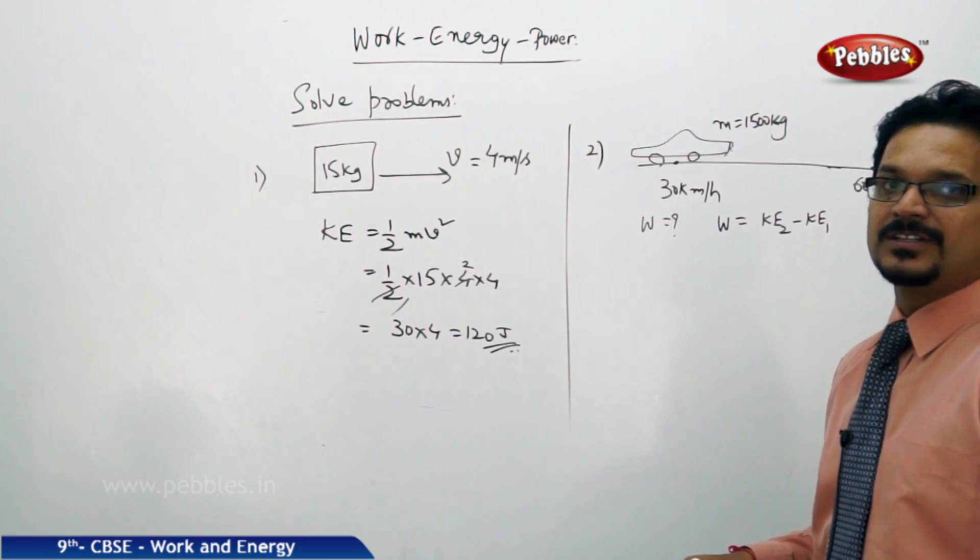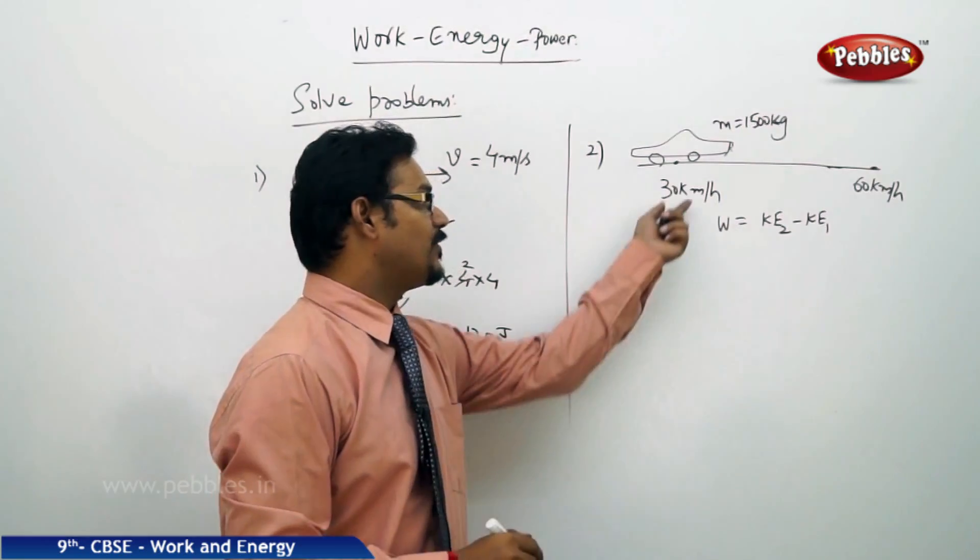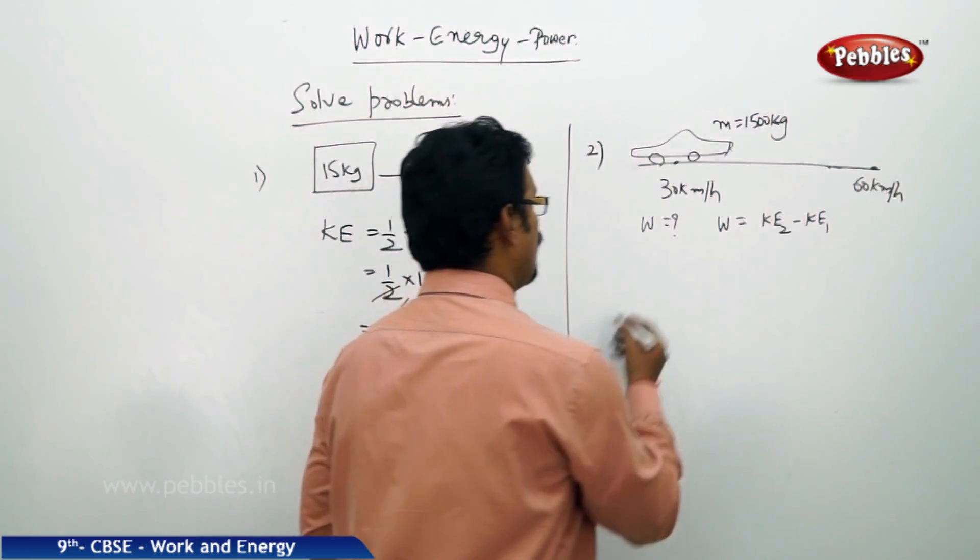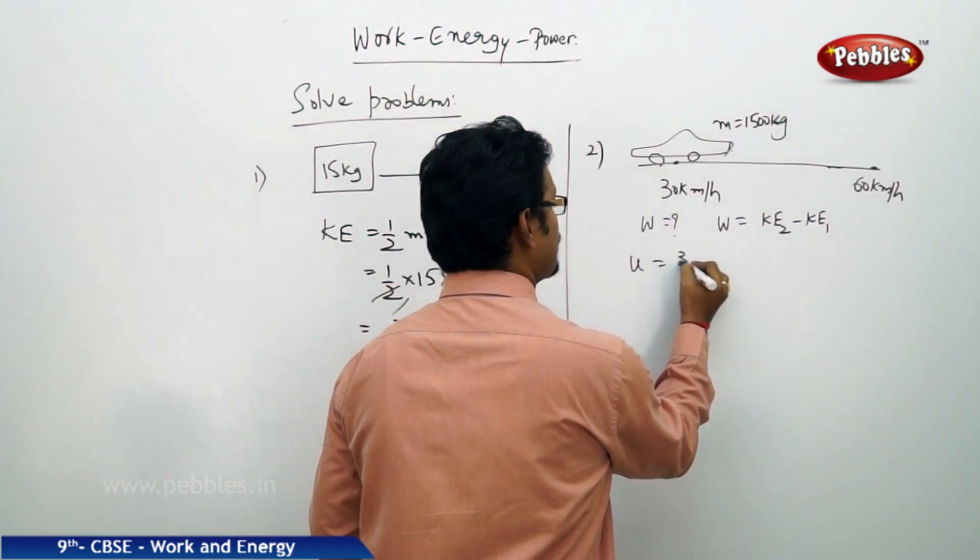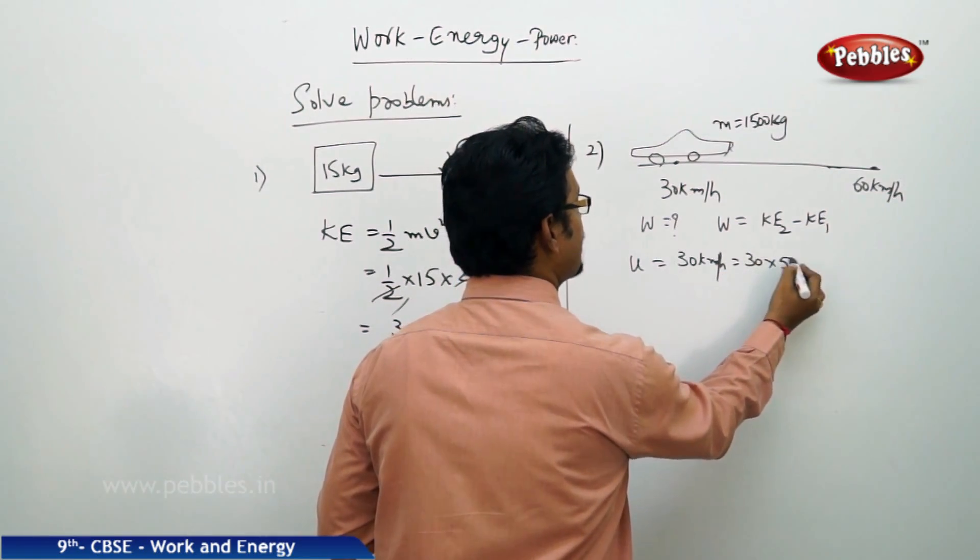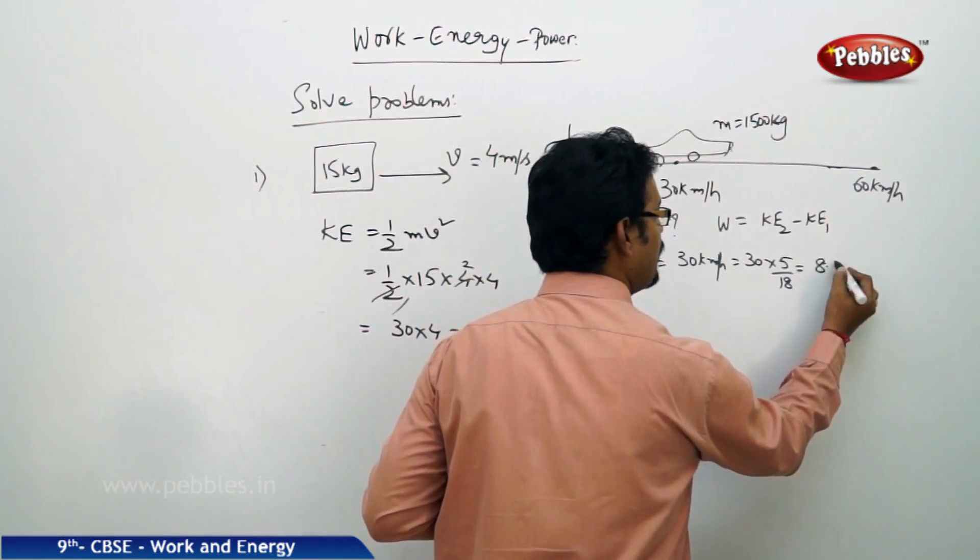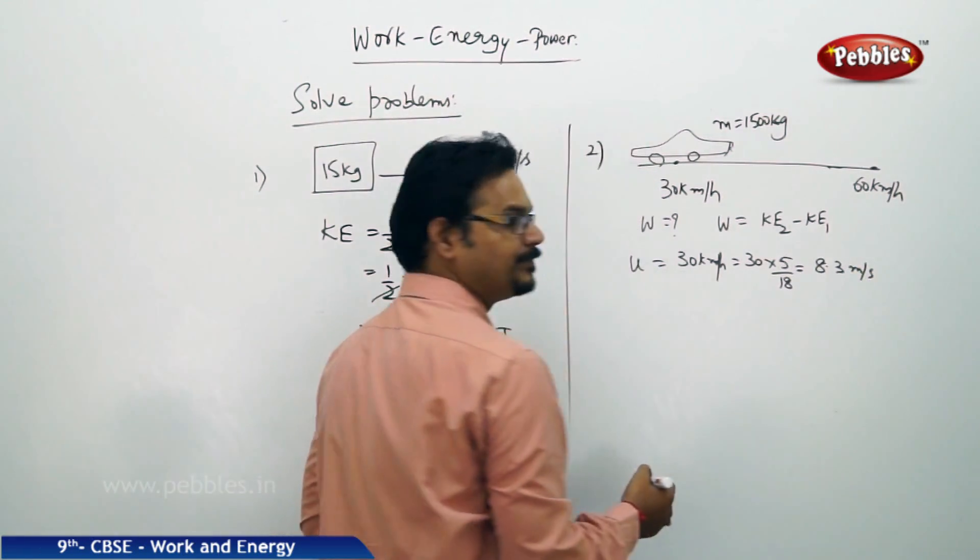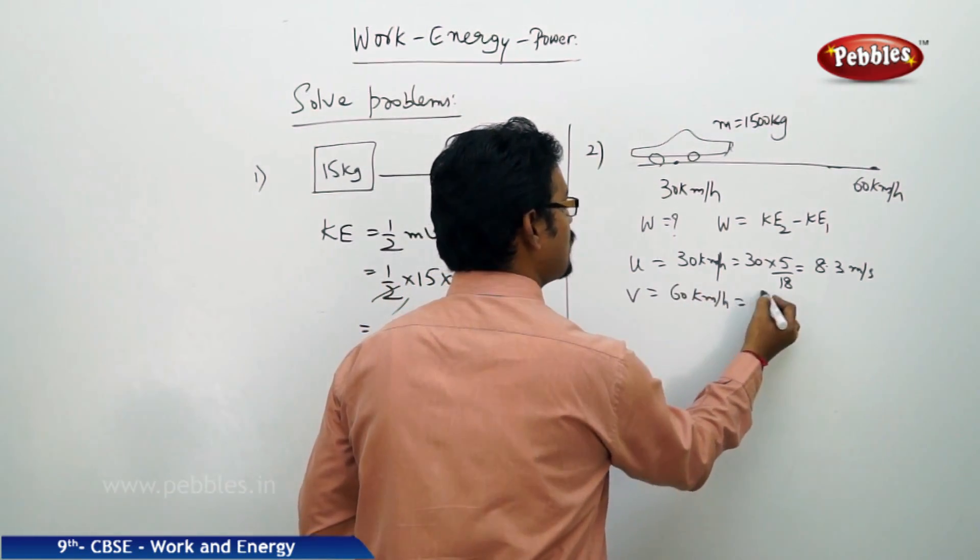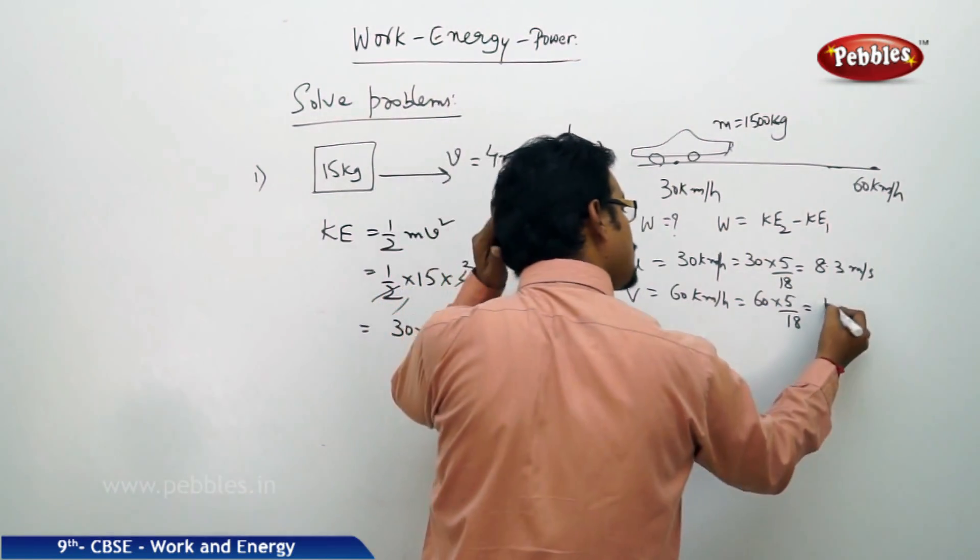To find kinetic energy, first of all we convert kmph into meters per second. We need to convert into SI units. Initial velocity U which is 30 kmph, 30 into 5 by 18 equals 8.3 meters per second. Final velocity V is 60 kmph, so 60 into 5 by 18 equals 16.67 meters per second.